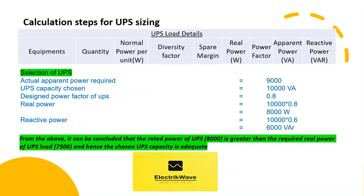UPS loads can be calculated as tabulated, which includes various components: quantity, normal power of each component, diversity factor, spare margin, real power, power factor, apparent power, and reactive power.